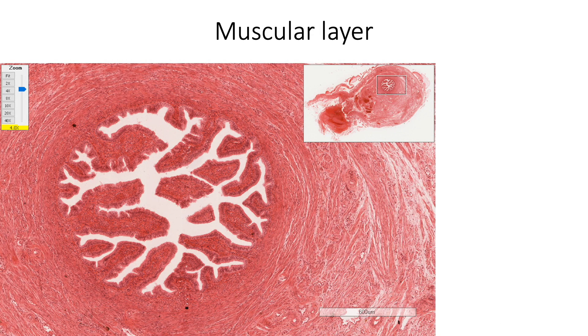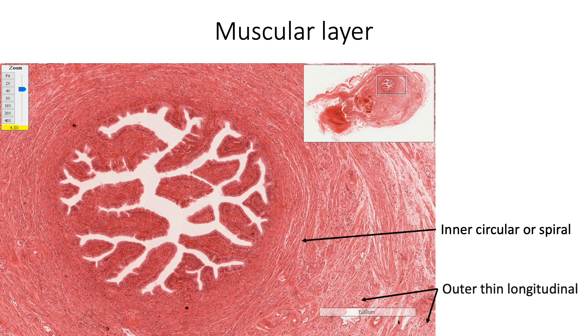The muscular layer is made up of an inner circular or spiral layer of smooth muscle fibers and an outer thinner longitudinal layer of smooth muscle.